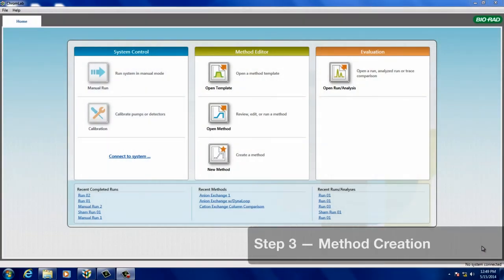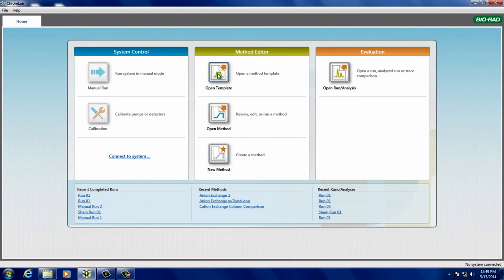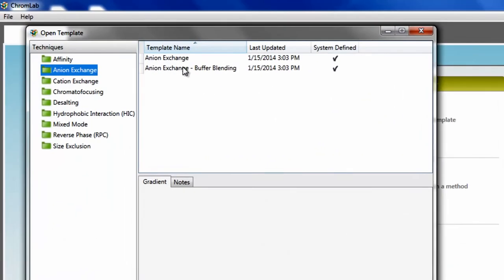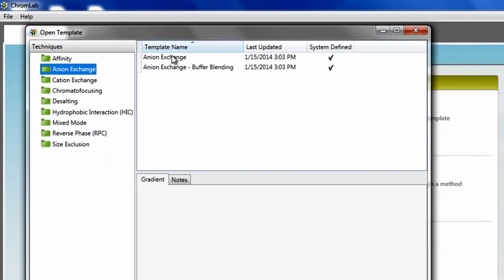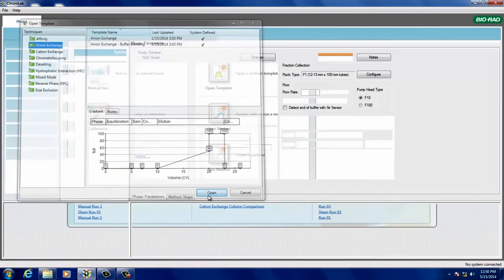Finally, you'll prepare your Dyna Loop method in ChromeLab. From the home screen, go to Open a method template. For this example, let's choose anion exchange.